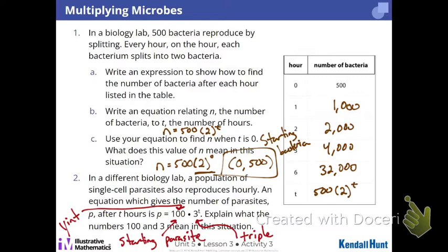So again, in context, this says I got 100 parasites. They're tripling every hour. Do you guys see the connection between the two?